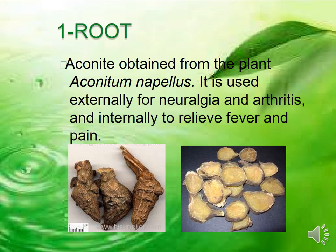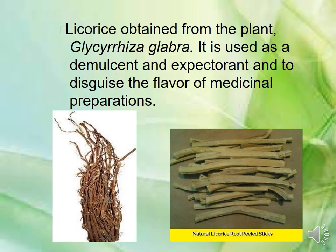The second example of a root-based drug is licorice, obtained from Glycyrrhiza glabra. It is used as a demulcent, emollient, and expectorant. It is also used to disguise the flavor of medicinal preparations. It is used to relieve irritation and has expectorant properties, and is used to treat cough.